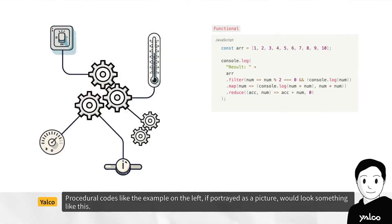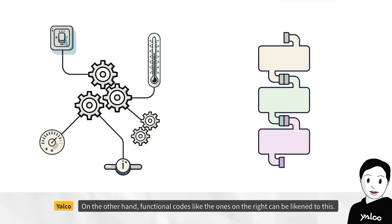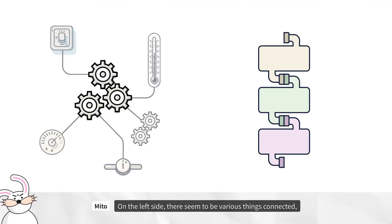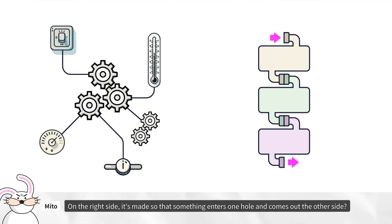Procedural codes like the example on the left, if portrayed as a picture, would look something like this. On the other hand, functional codes like the ones on the right can be likened to this. On the left side, there seem to be various things connected. On the right side, it's made so that something enters one hole and comes out the other side.